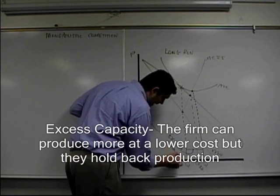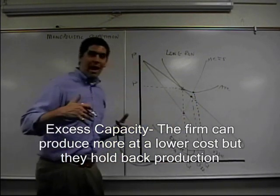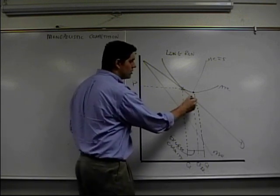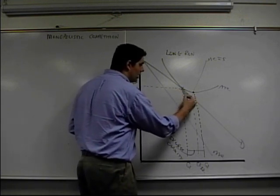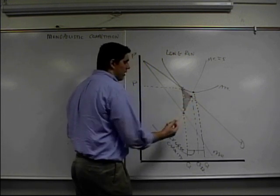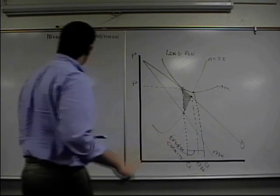Excess capacity means the idea that they could be producing at the lowest cost, but they're not. They're holding back production. Excess capacity. That's the concept. Perfect competition would produce here, so you can see there's deadweight loss with a monopolistically competitive firm. There's your deadweight loss. They could be producing more, but they're not. Great. Until next time.